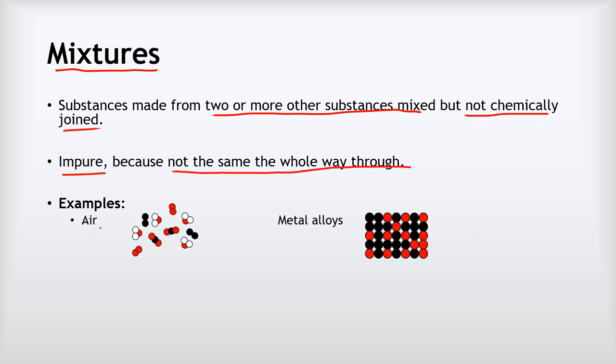For example, air is a mixture made up of these water molecules. We might have some oxygen molecules, carbon dioxide molecules, nitrogen molecules, all jumbled up, but they're not in a fixed ratio. The composition of air changes from time to time. And again, we had this metal alloy diagram from before. We've got these different substances, but they're not in a fixed ratio. So there are some areas with more blacks and some with more reds, and there's no clear pattern.